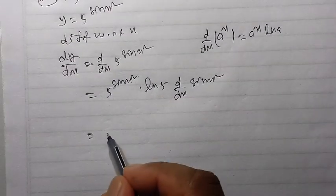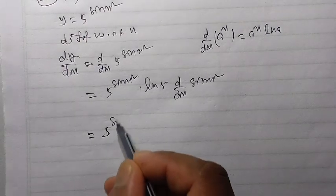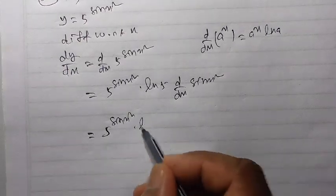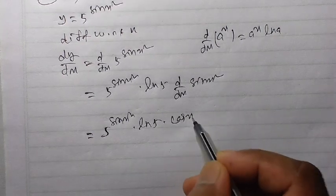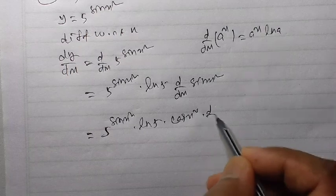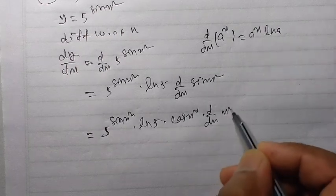Is equal to 5 to the power sin x square ln 5. Derivative of sin x square, that is cos x square. Again, derivative of x square.